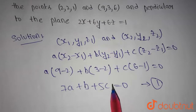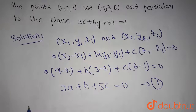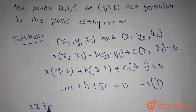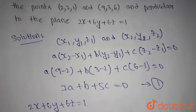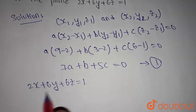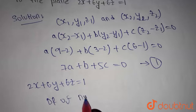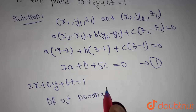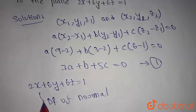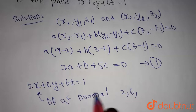It is given that the plane is perpendicular to the plane 2x + 6y + 6z = 1. Then the normal of our plane is also perpendicular to the normal of this plane. The direction ratios of the normal of this plane are 2, 6, 6.